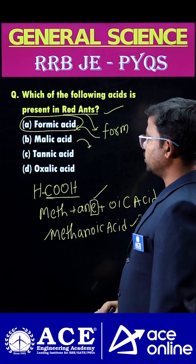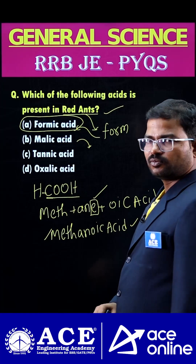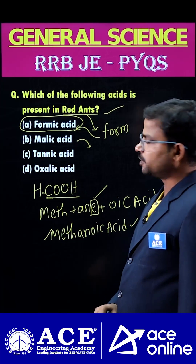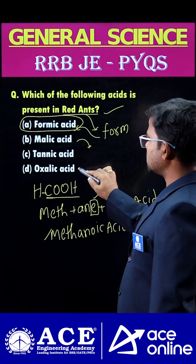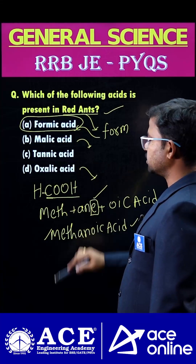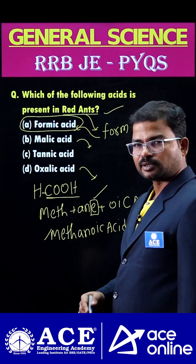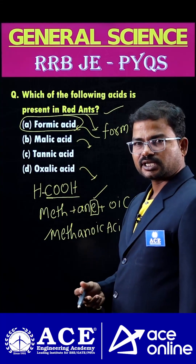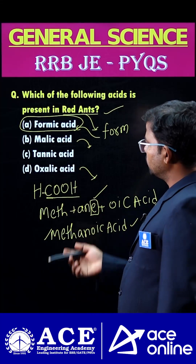Next, malic acid — where would we get it? Mostly from apples. Next, oxalic acid — spinach, tomatoes, and watermelon also.